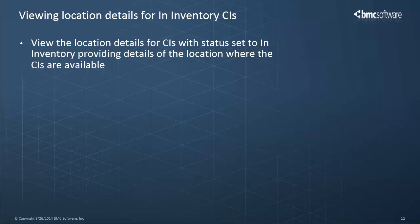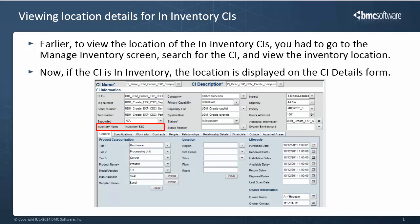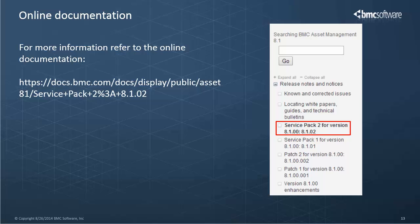Also with this release, location details of CIs that are in inventory are available in the CI details screen. Earlier, to view the location of in-inventory CIs, you had to go to the Managed Inventory screen, search for the CI, and view the inventory location. Now, if the CI is in inventory, the location is displayed on the CI details form.